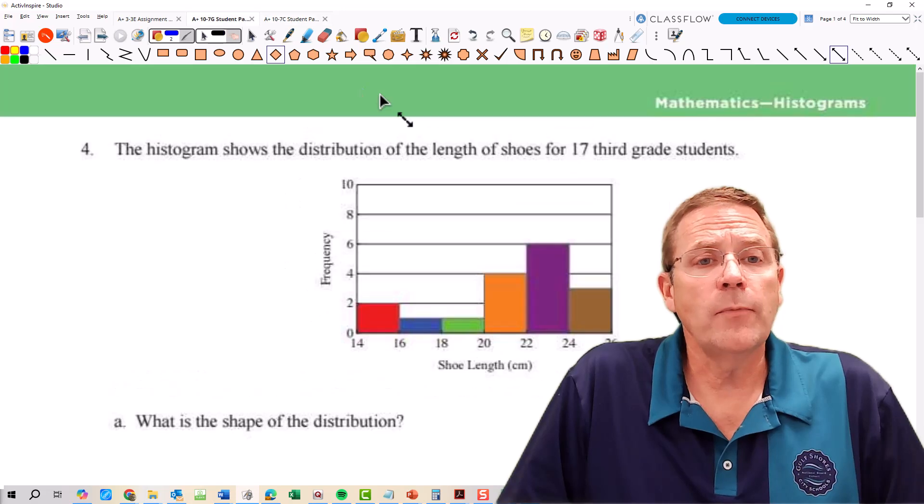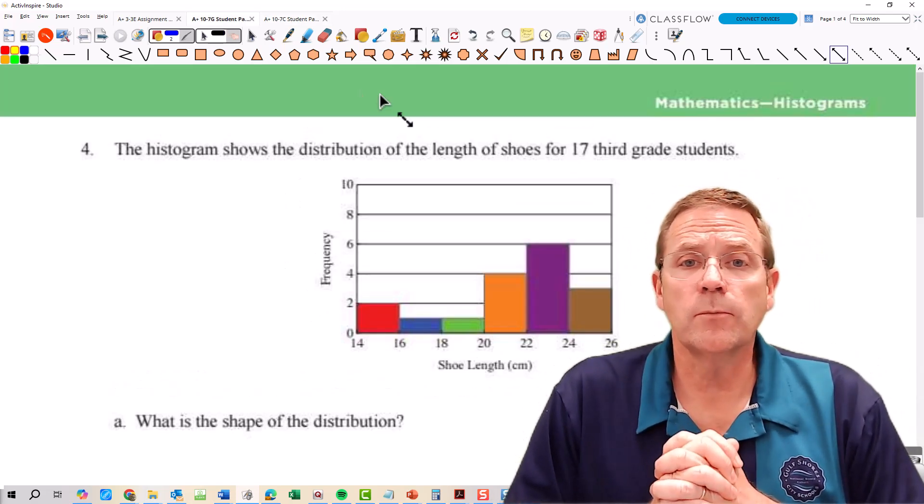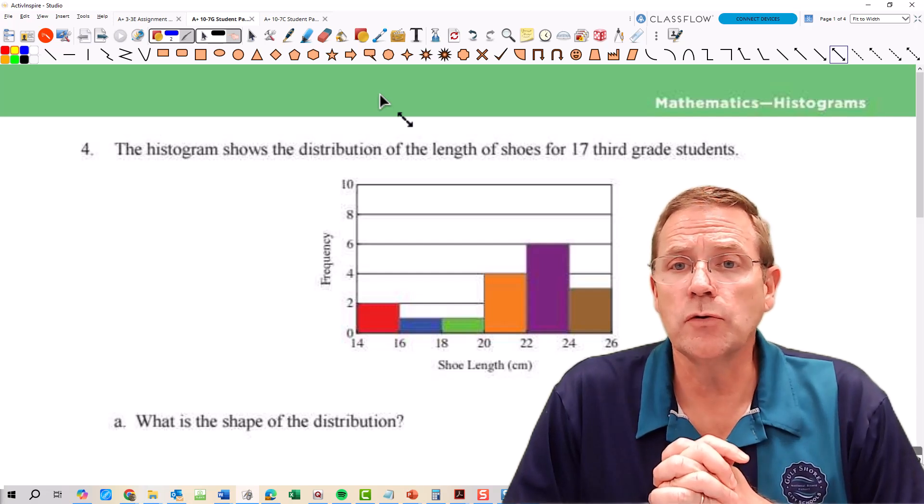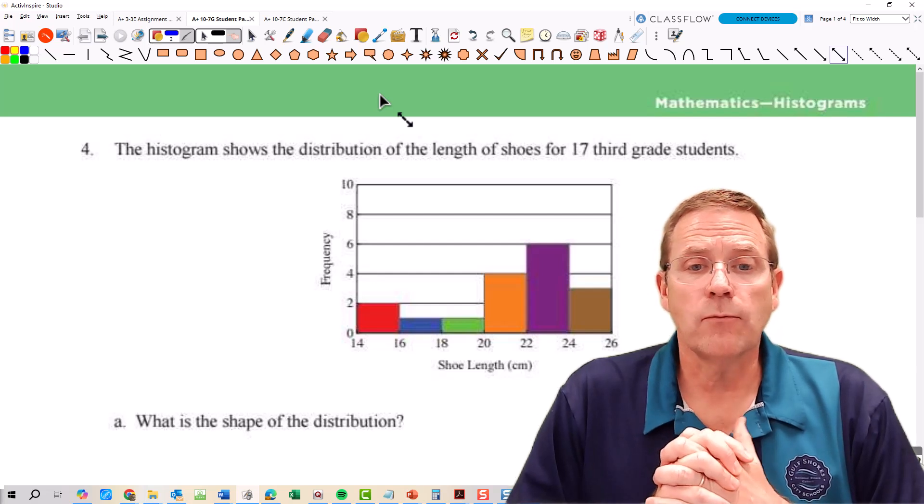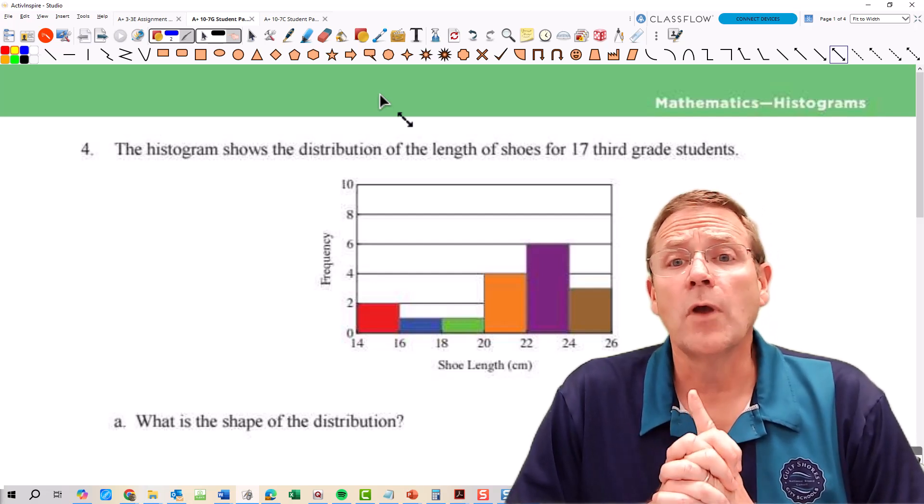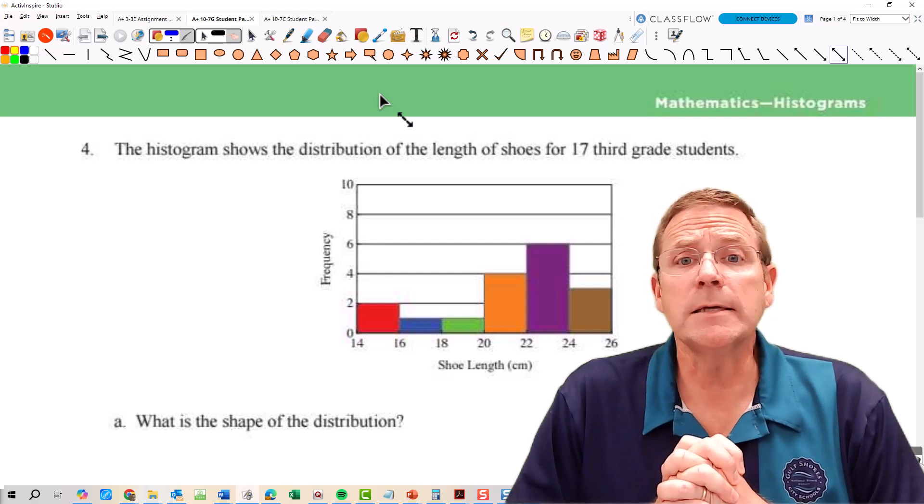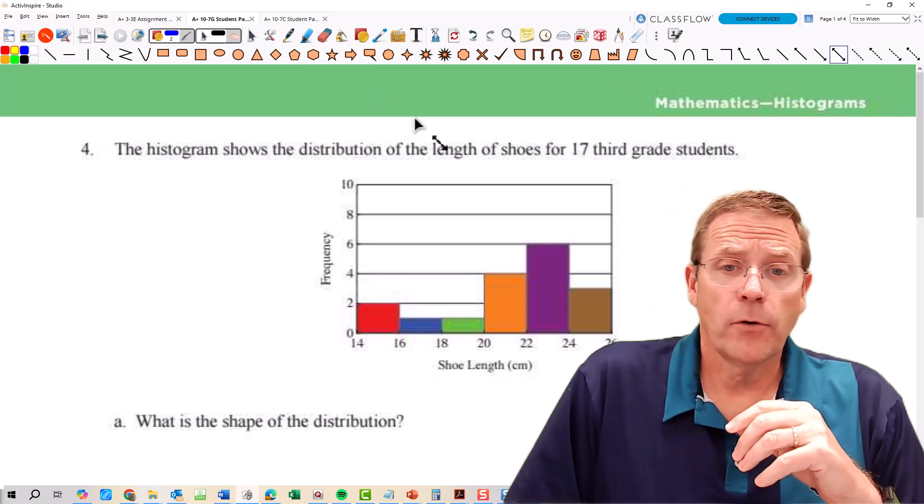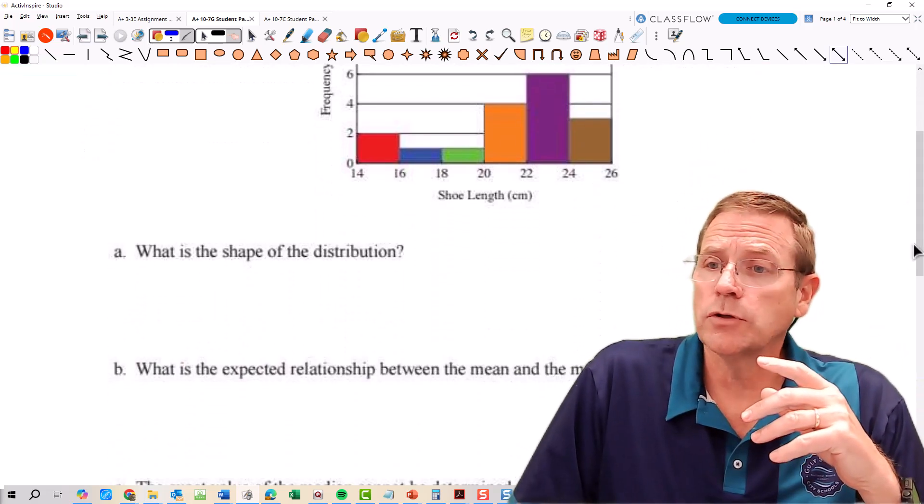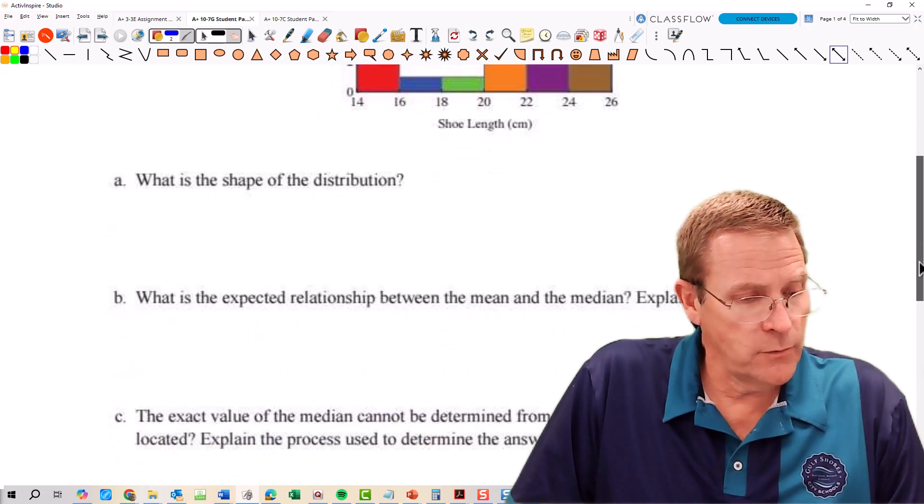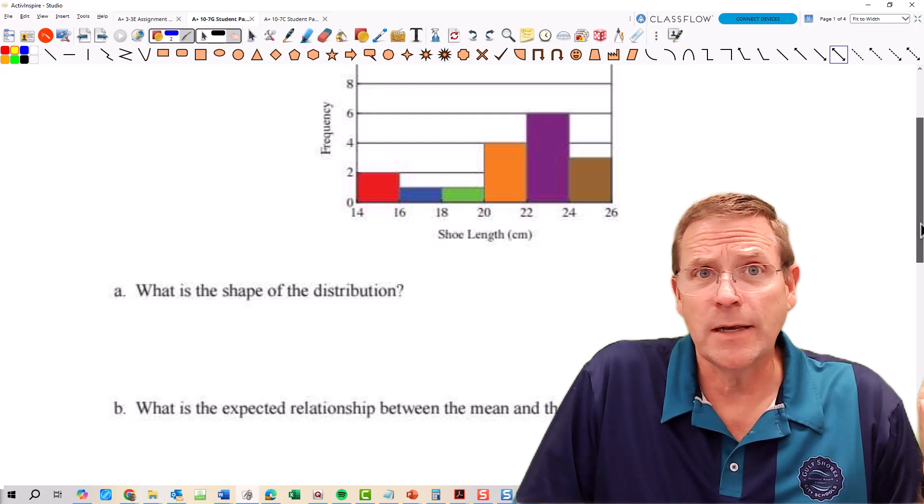Now we're going to do the same thing for this question right here. This histogram shows the distribution of the length of shoes for 17 third grade students. You can see in centimeters they range from 14 centimeters all the way up to 26 centimeters. That's a pretty big spread. First question is what is the shape of the distribution? Well shape gives us some choices. First one is: is it symmetric? It's definitely not symmetric.